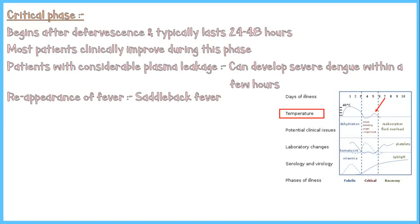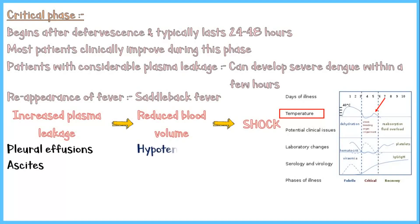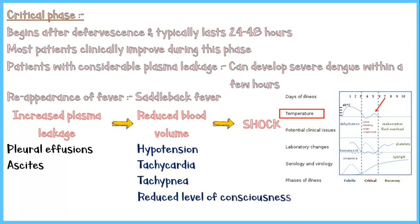Increased vascular permeability causes extensive plasma leakage, which causes blood volume to drop, ultimately resulting in hypovolemic shock. Due to plasma leakage, the patient may develop pleural effusions and ascites. Due to the reduced blood volume, the patient may have hypotension, tachycardia, tachypnea, reduced level of consciousness, and hemoconcentration.